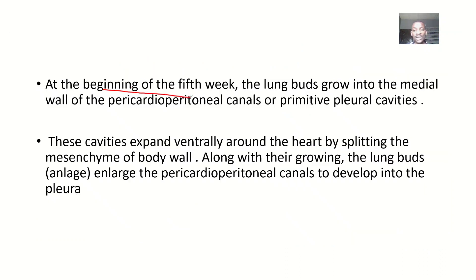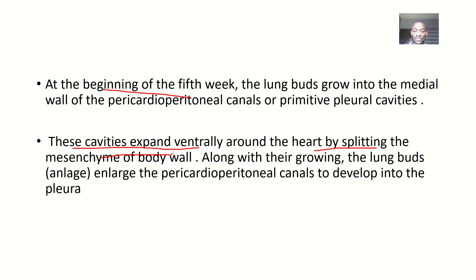At the beginning of the fifth week, the lung buds grow into the medial wall of the pericardio-peritoneal canal, also called the primitive pleural cavities, because it will develop into the pleural cavities. These cavities expand ventrally around the heart by splitting the mesenchyme of the body wall. As the lung buds are growing, they are also enlarging the pericardio-peritoneal canal to develop into the pleural cavity — that's why they are called primitive pleural cavities.